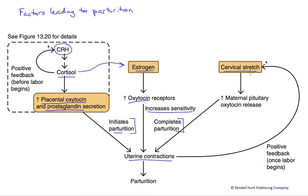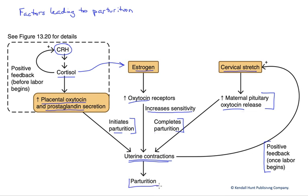That cervical stretch actually stimulates oxytocin secretion in the mother, and that oxytocin causes uterine contractions to get even stronger. This creates a positive feedback loop because the contractions cause greater cervical stretch, which causes more oxytocin, which causes contractions to get stronger — around and around we go until we get parturition or childbirth.